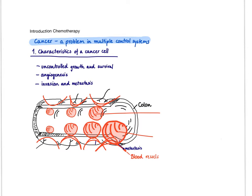In this video, I'm going to give you an introduction to cancer chemotherapies. The first thing we're going to discuss is the key characteristics of a cancer cell — what makes a cancer cell and how you get from a normal cell to a cancer cell. In the second part, we're going to talk about the two big drug groups: non-targeted chemotherapies and targeted chemotherapies.